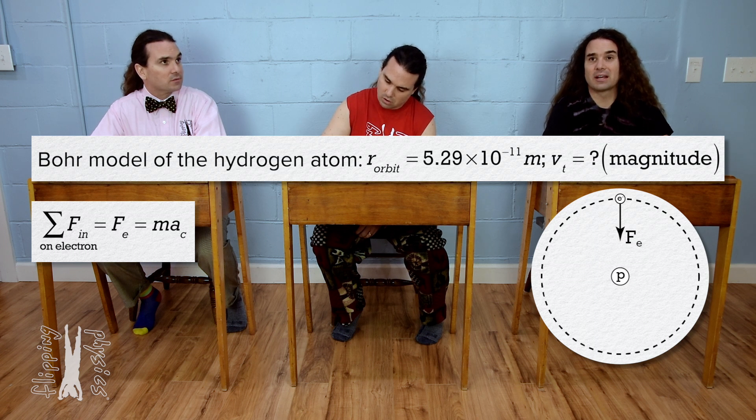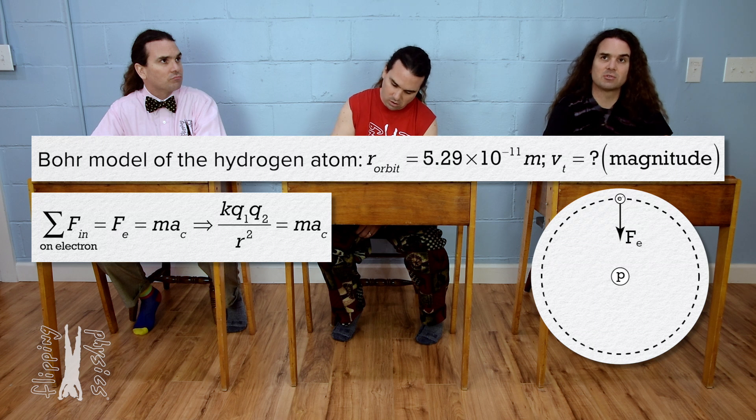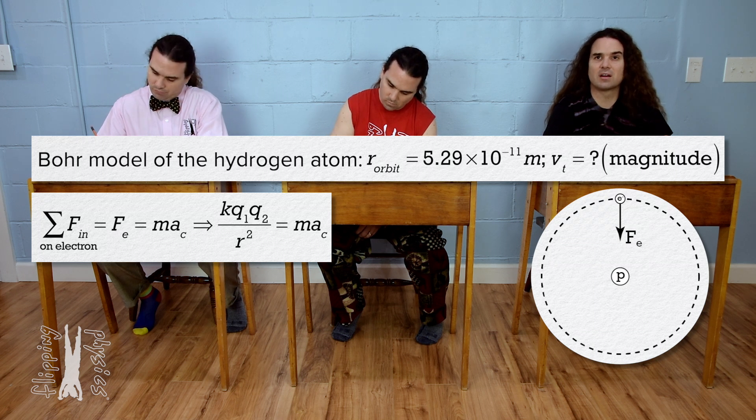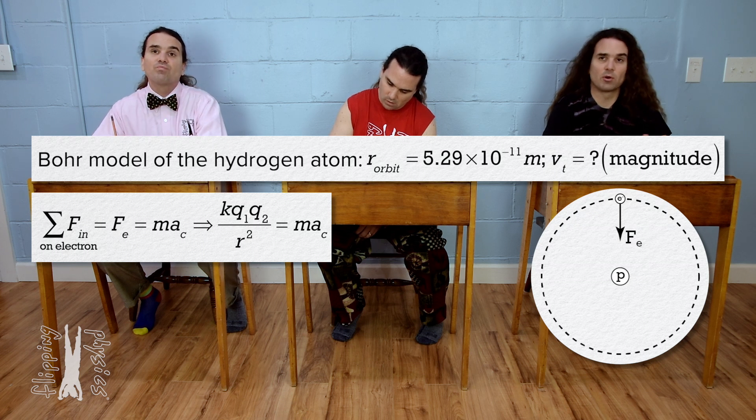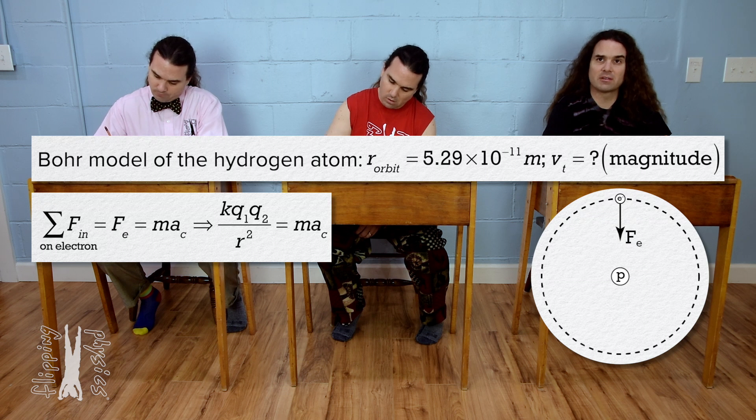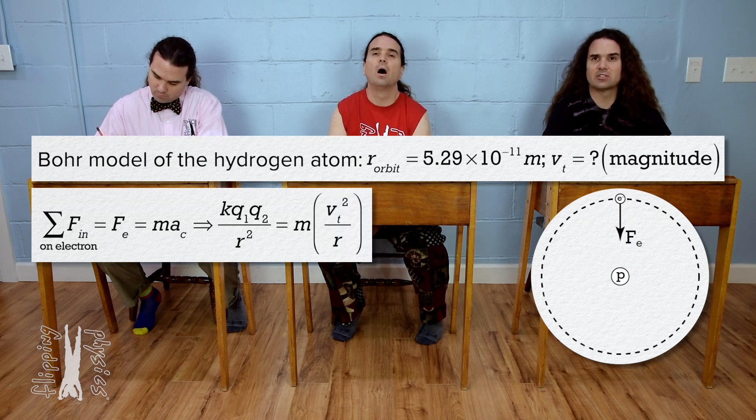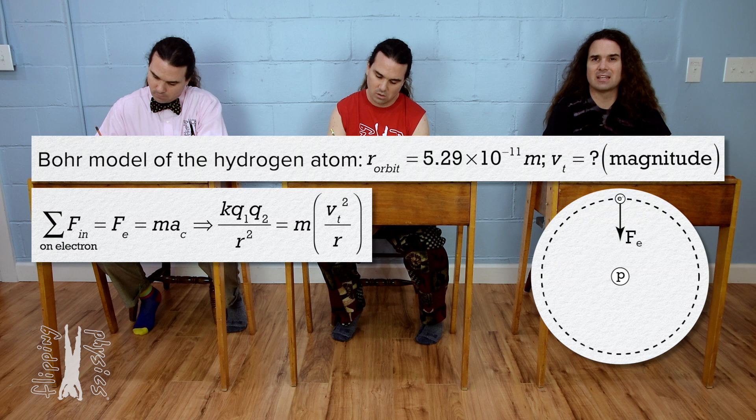For the electric force, we can substitute the Coulomb constant times charge one times charge two divided by the square of r, the distance between the centers of charge of the two charges, the proton and the electron. And for the centripetal acceleration, we can substitute in tangential velocity squared divided by radius.